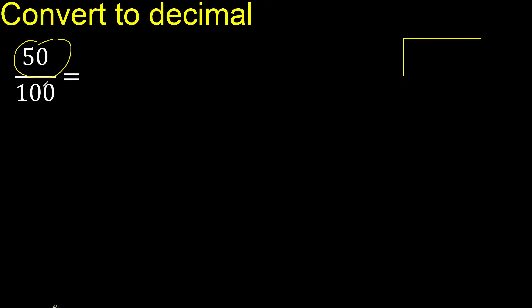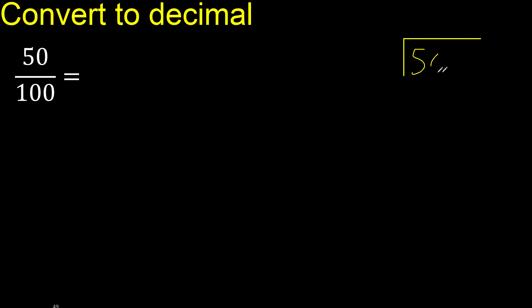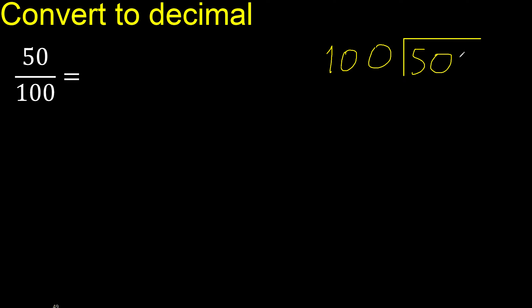50 divided by 100. 50 is less, therefore complete — always complete with 0. Here, 0 point.